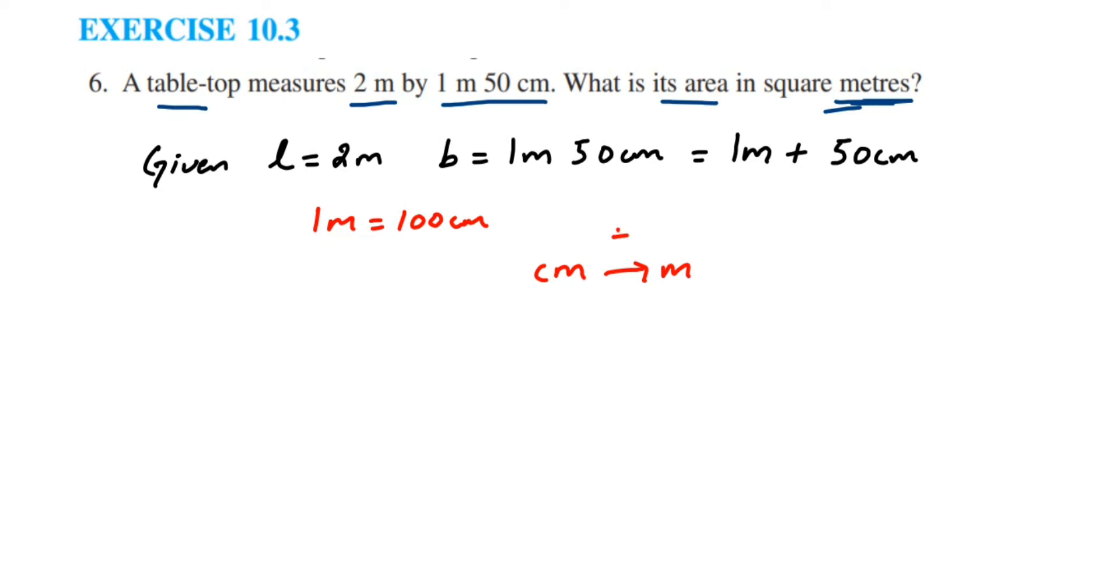So 50 centimeter will be equal to 50 divided by 100 meter. You can cancel zeros, or instead of canceling, you can directly write the answer in decimal.